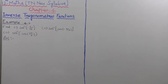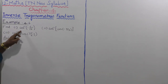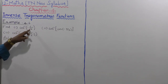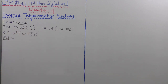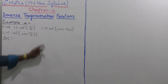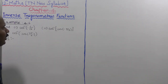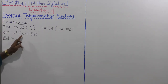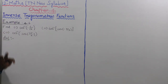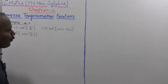Example 4.6. Find the first substitution: cos inverse of minus 1 by root 2. Next one: cos inverse of cos of minus 5 pi by 3. Next one: cos inverse of cos of 7 pi by 6.